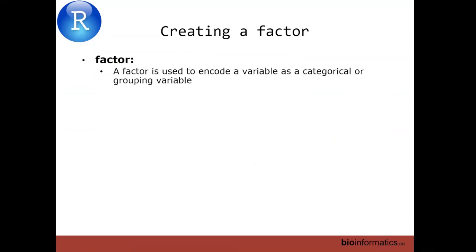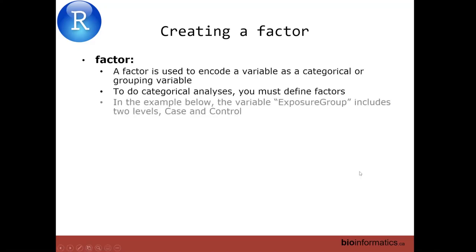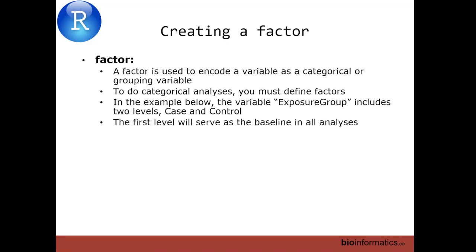Now we want to create a grouping variable out of that zeros and ones vector. A factor is the term used in R for grouping variables or categorical variables. To do categorical analysis you have to define factors. Otherwise, if R sees numbers it's going to interpret them as numerical values. The first level is the baseline in all analyses — in general, you want control to be the baseline and measure the effect of being a case or having an exposure.